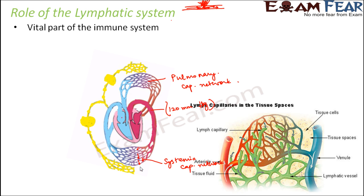That is where the concept of the lymphatic system comes in. The fluid from the tissue spaces enters the lymph capillaries — the green colored tubes you can see here. The lymph capillaries are located under the skin surrounding the tissue cells, and that is why the leaked out fluid tends to enter the lymph capillaries.